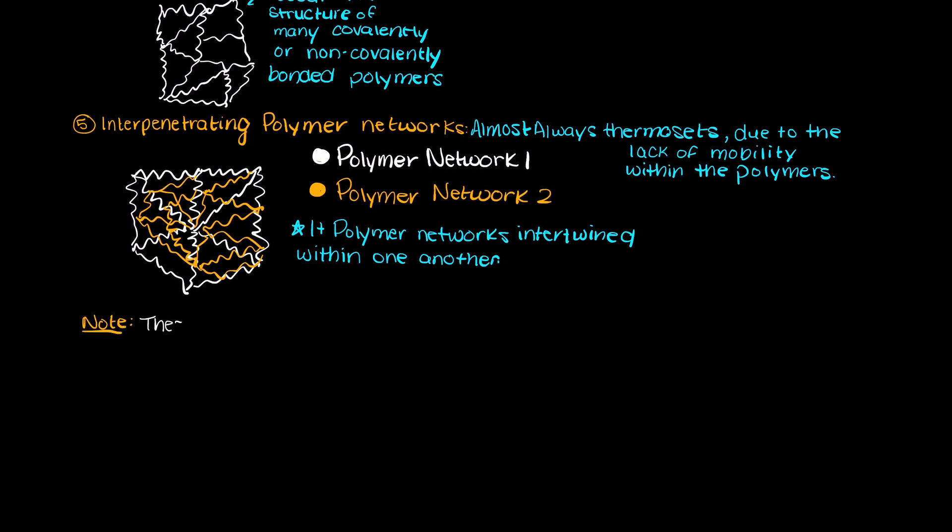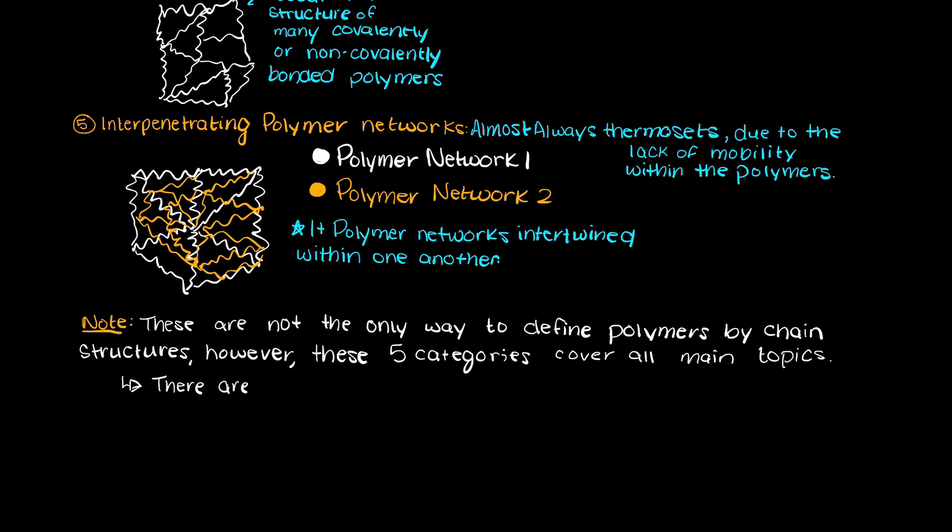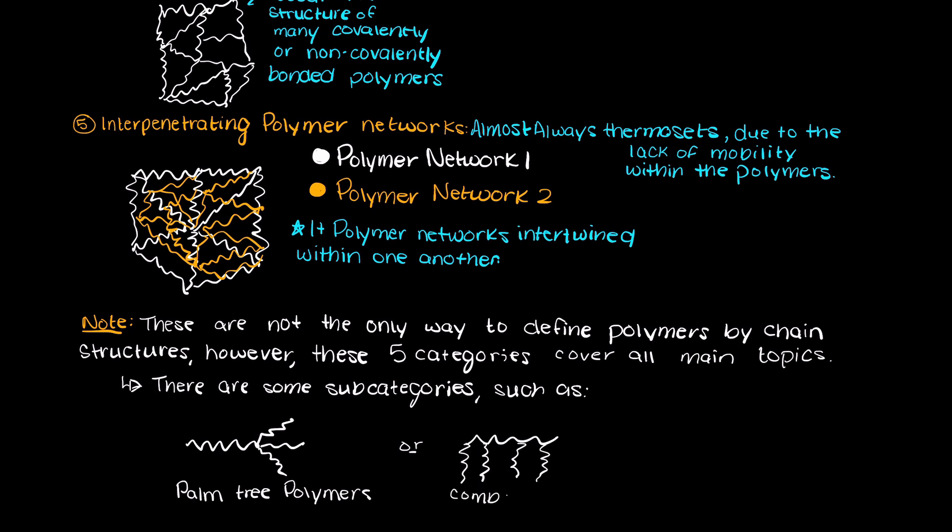Now, these are certainly not the only ways that we can classify polymers by chain structures. However, these four categories cover just about everything. There are many subcategories of these types of polymers, such as palm tree polymers and comb polymers, which are just different types of branch polymers.